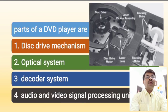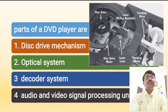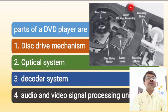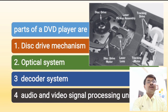Here I am showing the important parts of a DVD player, as questions may be asked in the exam. List the important parts of a DVD player: first is the disc drive mechanism; second is the optical system, which includes the lens system and laser assembly unit; third is the decoder unit; and last is the audio and video signal processing unit.